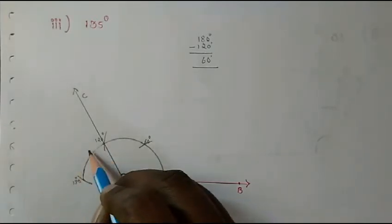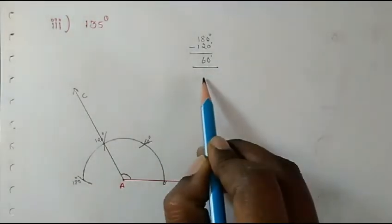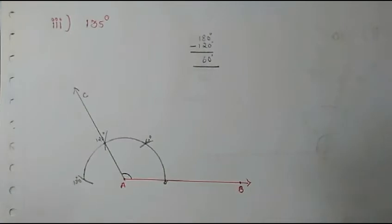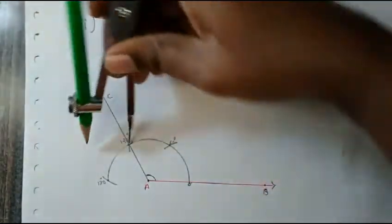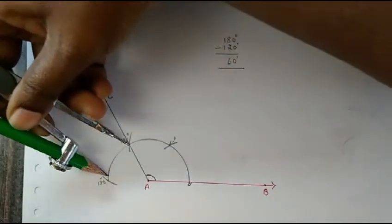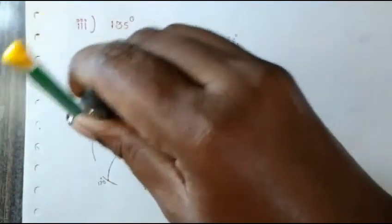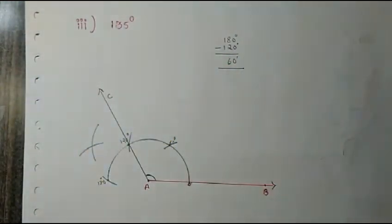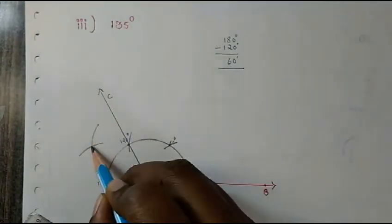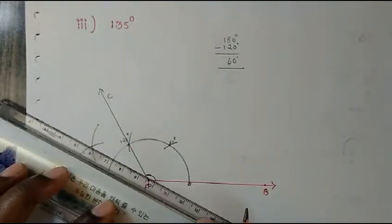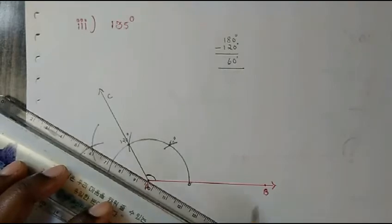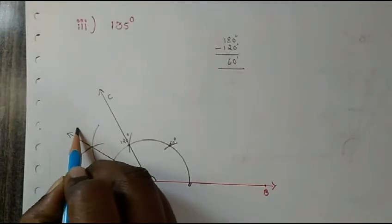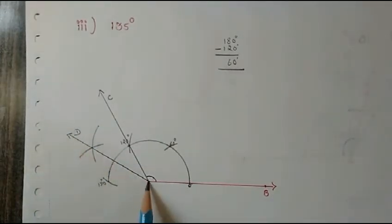So this 60 degree arc, if I divide it equally in half, I get 30 and 30. To divide it, take the compass, measure more than half the arc, draw an arc from the 120 point, then keep the compass at the 180 point and draw another arc. Join the intersection point — let's call it D.